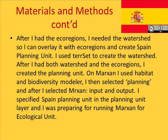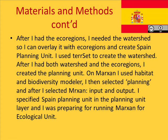After obtaining the ecoregions, I needed to create watersheds to overlay the ecoregions and create Spain's planning units. I used TerrSet to create the watershed. After having both the watershed and the ecoregions, I created the planning unit in Marxan. I used the Habitat and Biodiversity Modeler, then selected Planning, and thereafter selected Marxan input and output. I specified the Spain planning unit in the planning unit layer and was prepared for running Marxan for the ecological unit.